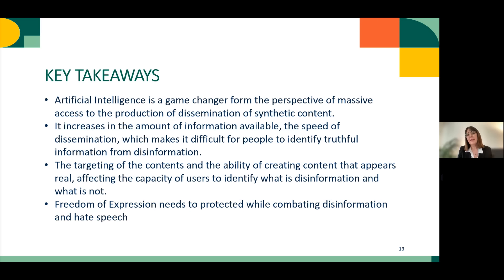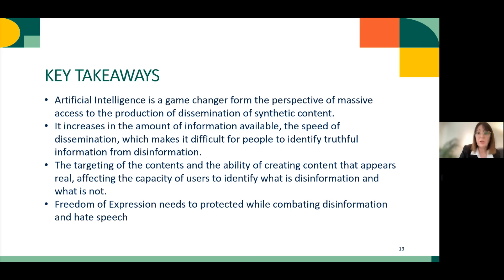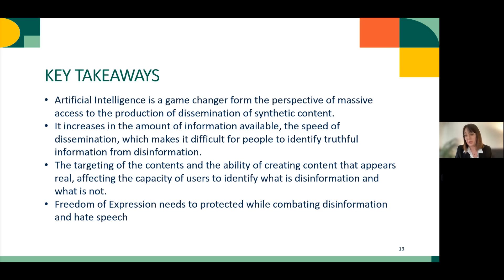So what are the main takeaways of this first part? Artificial intelligence is a game changer that creates a lot of issues and amplifies information pollution. The production and dissemination of synthetic content has changed a lot and is affecting democratic processes. The amount of information available and its quality makes it more difficult for users, voters, and stakeholders to differentiate what is true from what is not, and what is the origin of this content. Micro-targeting is also becoming more serious, and users are often not aware of it.